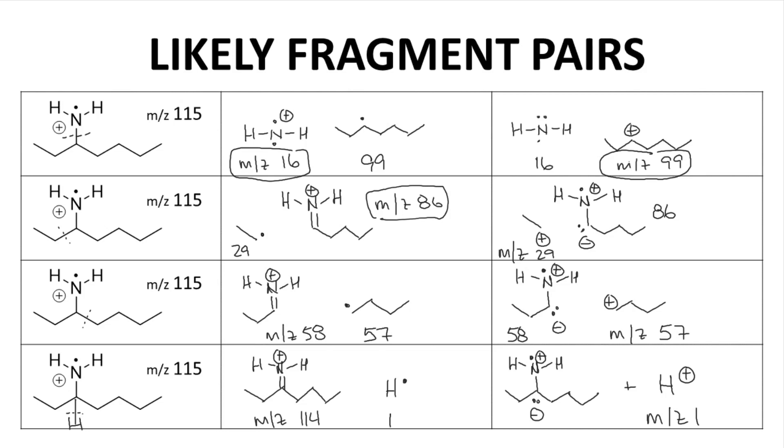So with just four bonds to consider, we still have many likely fragments, eight in total, although not all of these will likely be observed.